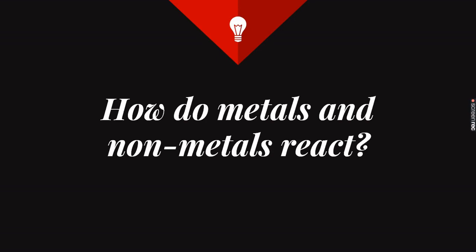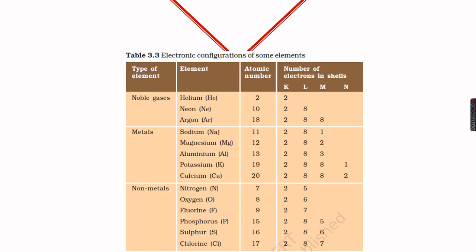In this video we will study how metals and nonmetals react. But before that we should know why they react. To understand that, let's have a look at Table 3.3 given in the textbook, where elements are divided into three categories: noble gases, metals, and nonmetals, with their electronic configurations.